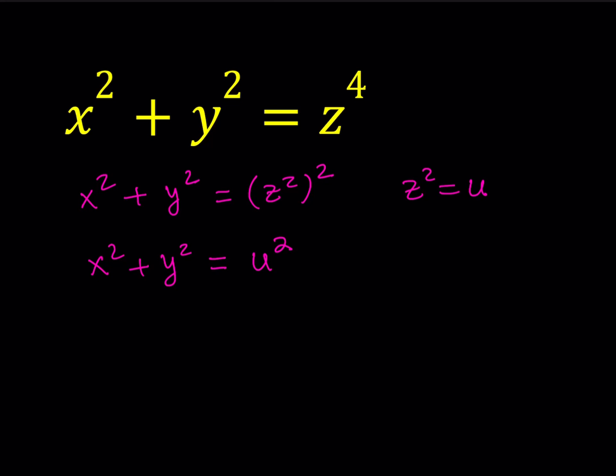This equation obviously has solutions. As you know, from the 3-4-5 triangle, 5-12-13, 8-15-17, and so on, there are infinitely many Pythagorean triples that satisfy this equation. But how do you find them? There is a way to generate those triples, which I'm not going to go into the full details of — maybe in another video — because I don't want to keep this video too long.